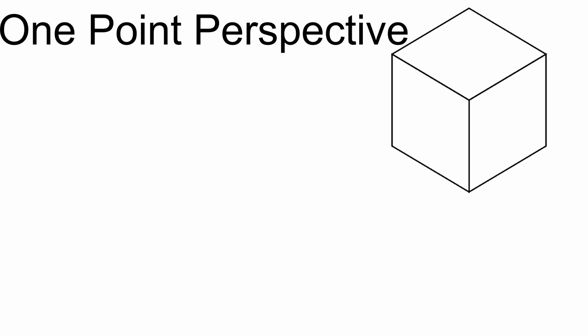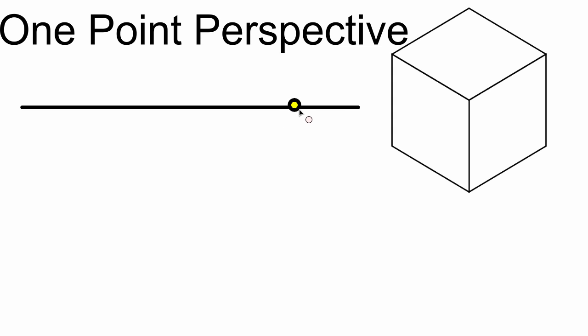So let's go through an actual working of this and see how it functions. The first thing I'm going to do is draw in my horizon line. Once I have my horizon drawn, I'm going to add a vanishing point — it can be anywhere on that line. Generally, you want to draw your front view to the left or right of that point. Since I drew my point on the right, I'm going to draw my square down here on the left.